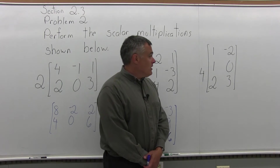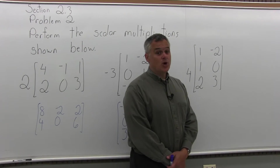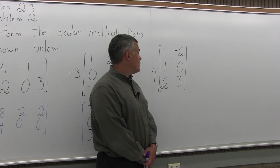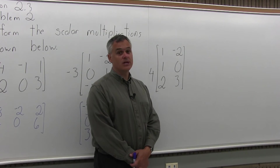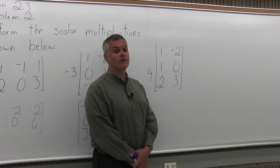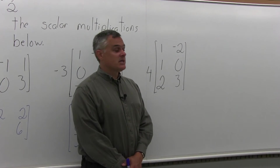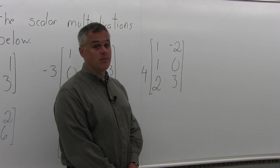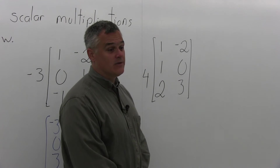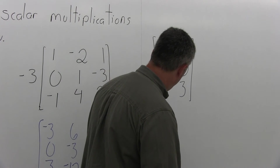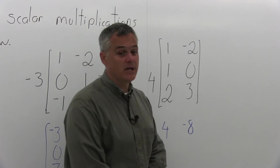Now there's one more. You have a matrix with 1, negative 2 in the top row, 1 and 0 in the middle row, and then 2 and 3, both positive, in the bottom row, and you have a 4 in front of that matrix. So every item in the matrix has to be multiplied times 4. On the top, the 1 becomes 4, and the negative 2 becomes negative 8, when each one gets multiplied times 4.